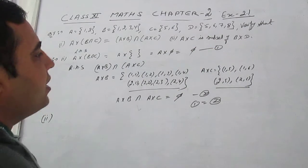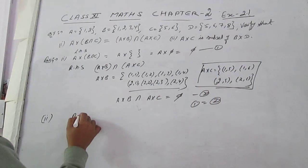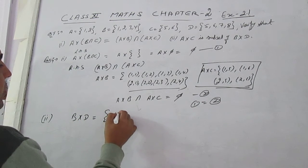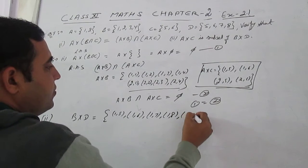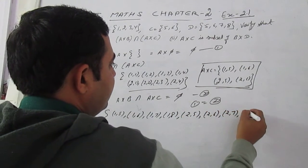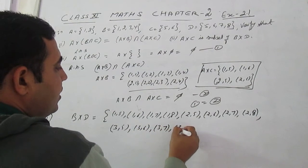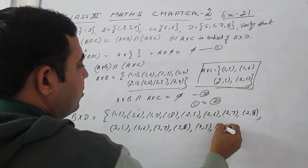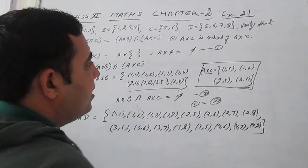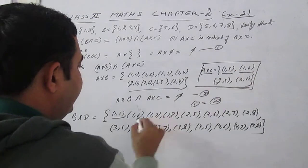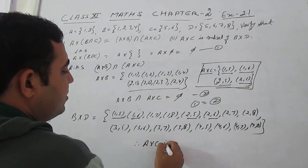Part 2: Prove that A×C is a subset of B×D. A×C = {(1,5),(1,6),(2,5),(2,6)}. B×D = {(1,5),(1,6),(1,7),(1,8),(2,5),(2,6),(2,7),(2,8),(3,5),(3,6),(3,7),(3,8),(4,5),(4,6),(4,7),(4,8)}. All elements of A×C belong to B×D, therefore A×C is a subset of B×D.